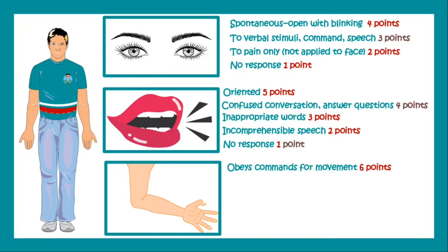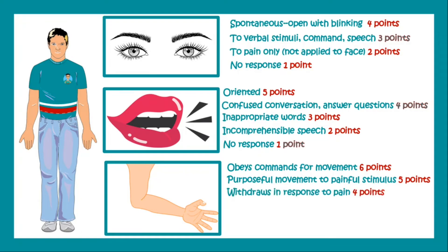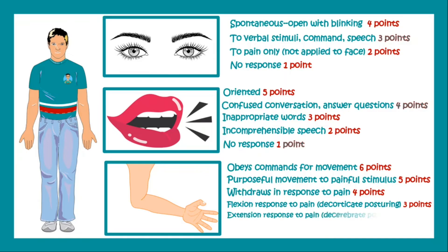In case of motor response, if the patient obeys a command for movement, it is six points. Purposeful movement to painful stimulus is five points. If the patient withdraws in response to pain, it is four points. Flexion response to pain — that is decorticate posturing — is three points. Extension response to pain — that is decerebrate posturing — is two points. And no response is given one point.